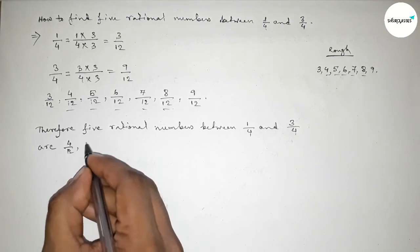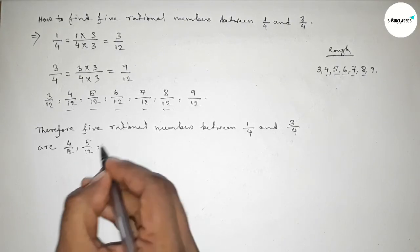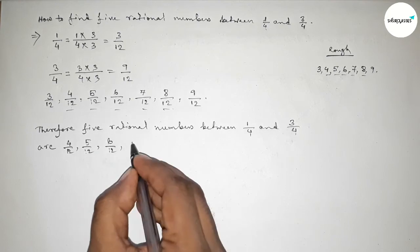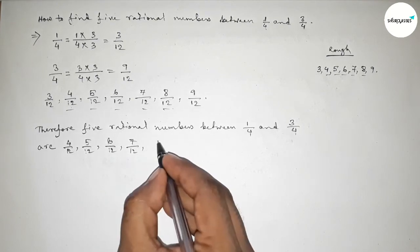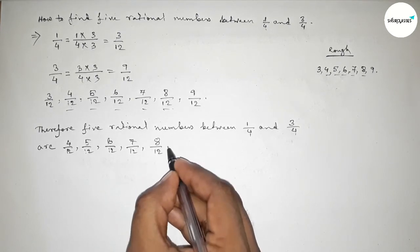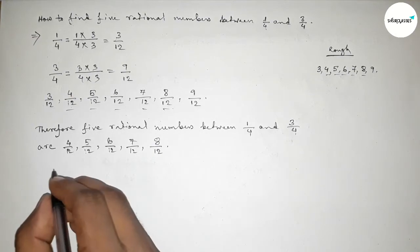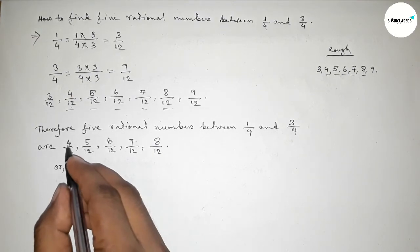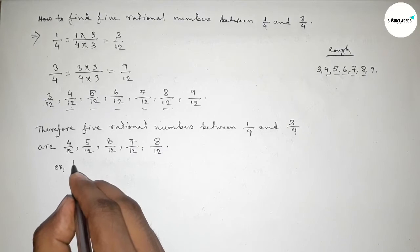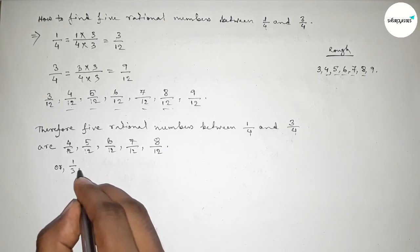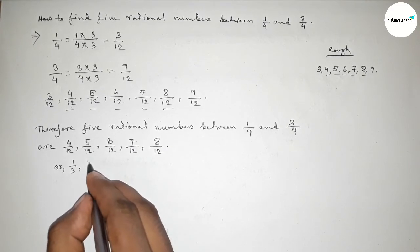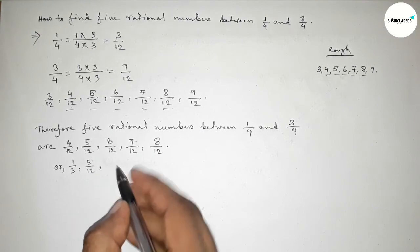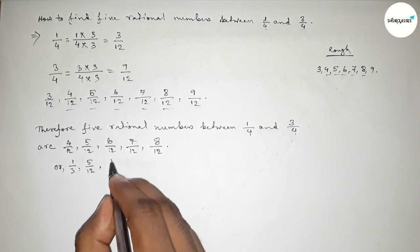First one: 4 over 12, then 5 over 12, 6 over 12. Now if you divide both numbers by 6, then 6 into 6 is 1 and 6 into 12 is 2, so that's 1 over 2. And this is 5 over 12.